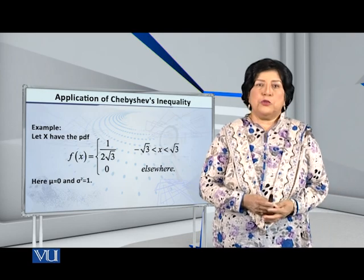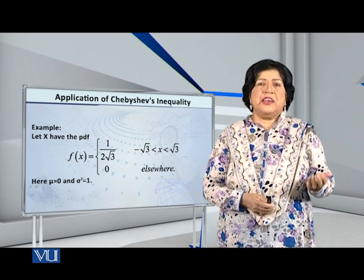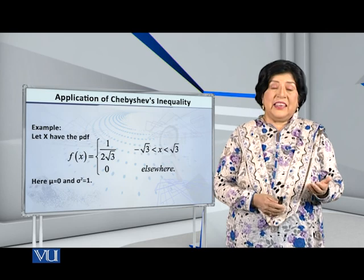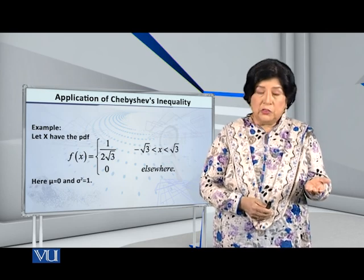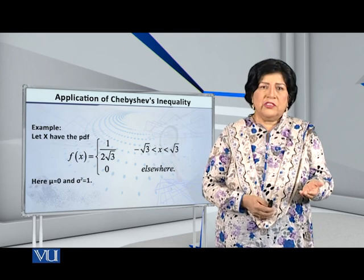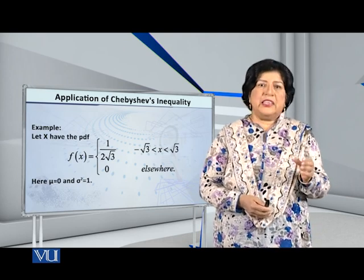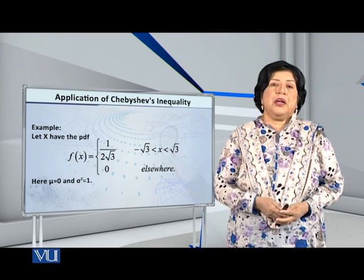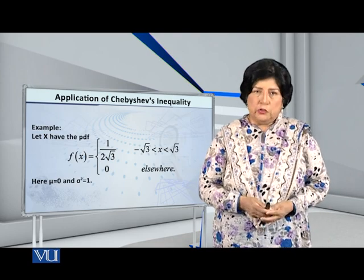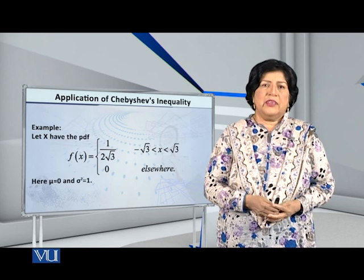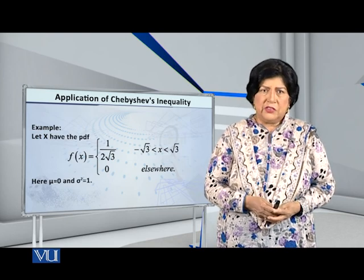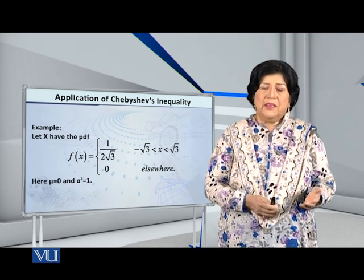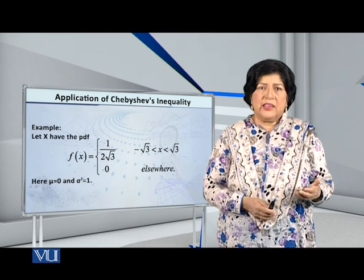Did you realize which distribution this is? It is the well-known continuous uniform distribution, where f(x) equals a constant and the range of x gives an area under the curve equal to 1. For this particular distribution, if you do the normal calculations to find the mean and variance, you will find that mu is equal to 0, and sigma squared, that is the variance, is equal to 1.